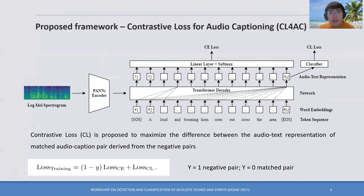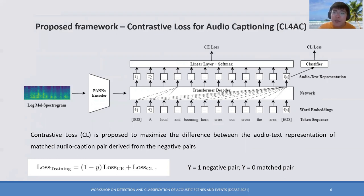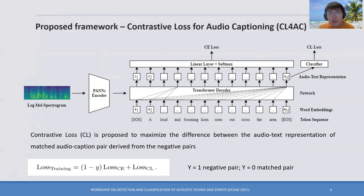The training loss of CL4AC is a combination of the conventional cross-entropy loss and the contrastive loss. For matched data, we use both contrastive loss and cross-entropy loss. For negative pair data, we only use the contrastive loss, because in this situation the cross-entropy loss doesn't have any meaning.